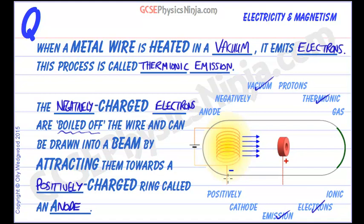Here we can see a diagram of the experimental setup. We've got a heating circuit with the metal wire as a coil. This heating circuit has a current flowing in it; the current flows into the wire, and because the wire has a resistance, it will heat up.